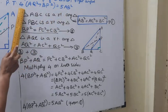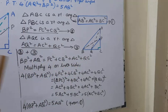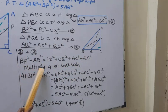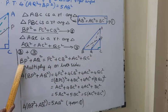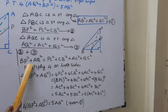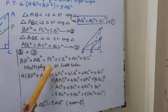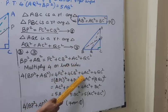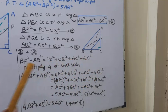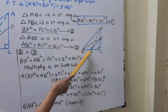We need to prove that 4AQ square plus BP square is equal to 5AB square. We do not have 4, so we multiply 4 on both sides — left hand side and right hand side. Then 4 multiplied gives us 4 times BP square plus AQ square.